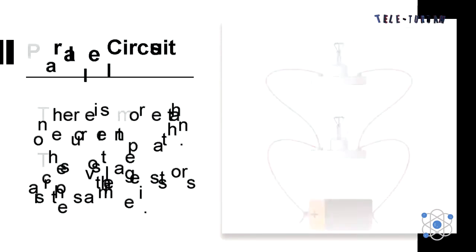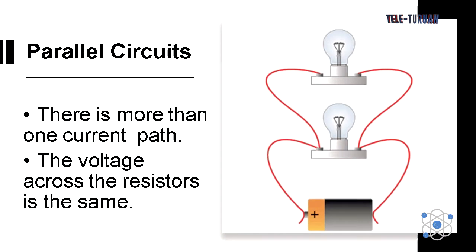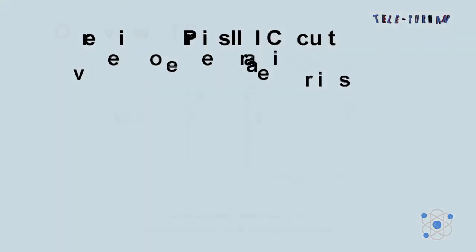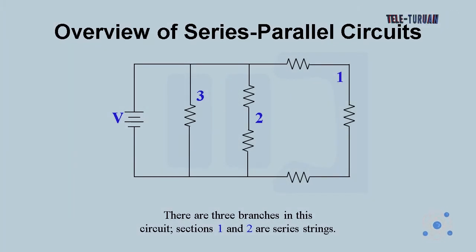In a parallel circuit, there is more than one current path. The voltage across the resistors is the same. This is an overview of series and parallel circuits.